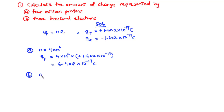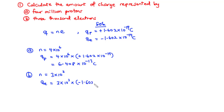Now for part B, we have N equal to 3,000, that is 3 × 10³. Therefore, Q_E equals 3 × 10³ times −1.602 × 10⁻¹⁹. Multiplying the two values, we obtain −4.806 × 10⁻¹⁶ coulombs.